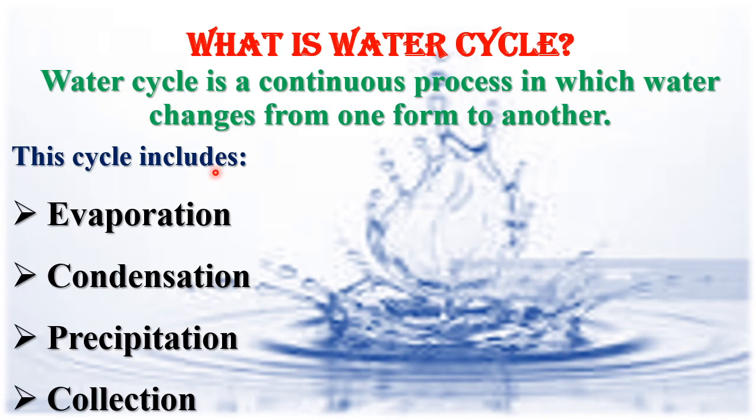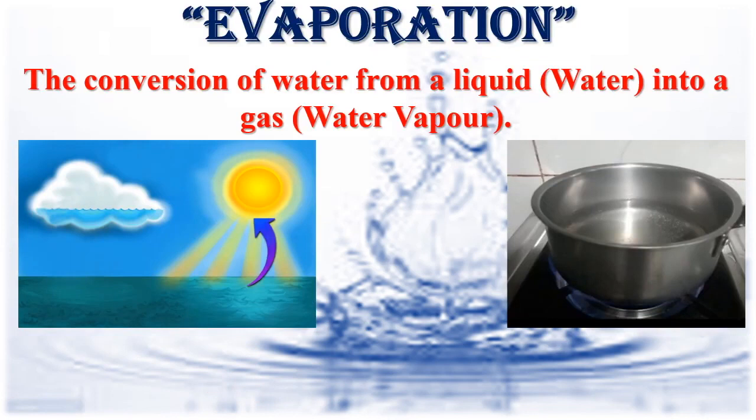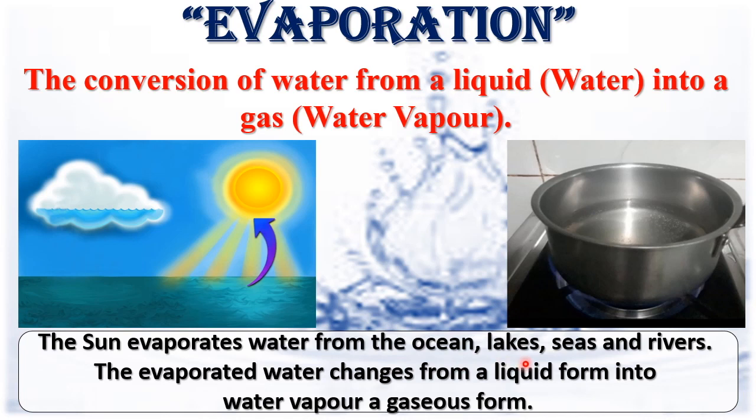Evaporation: the conversion of water from a liquid form into a gaseous form is called evaporation. The sun evaporates water from the oceans, lakes, seas, and rivers. The evaporated water changes from a liquid form into water vapor, a gaseous form.